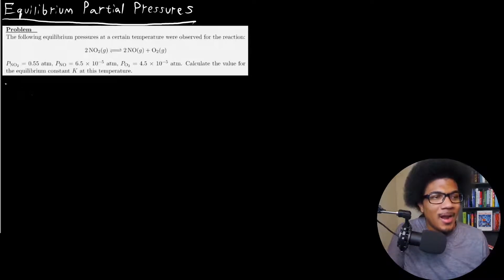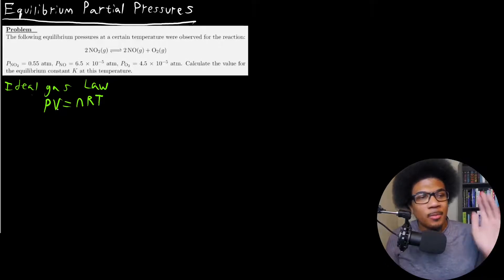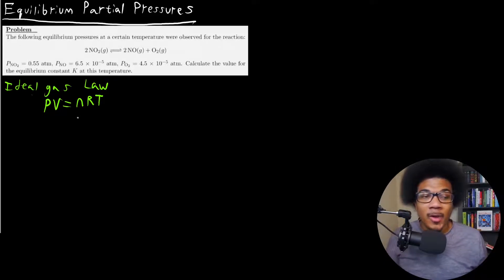So if we revisit our ideal gas law, PV is equal to NRT, where N is your number of moles, R is your gas constant, T temperature, V is your volume, and P is your pressure.